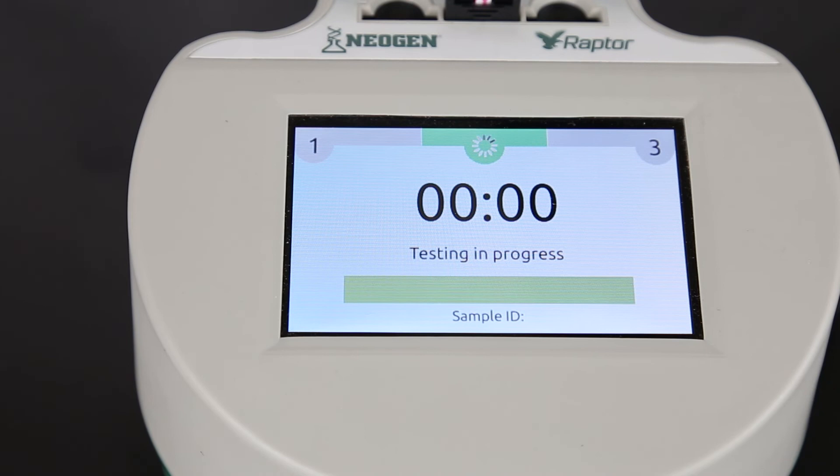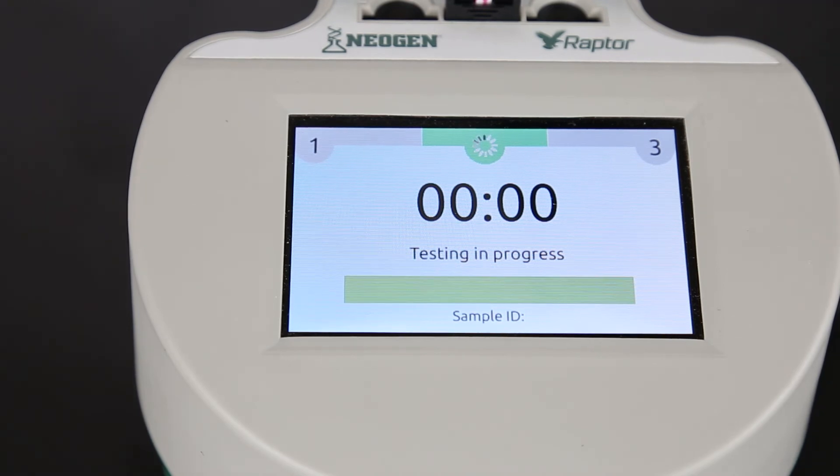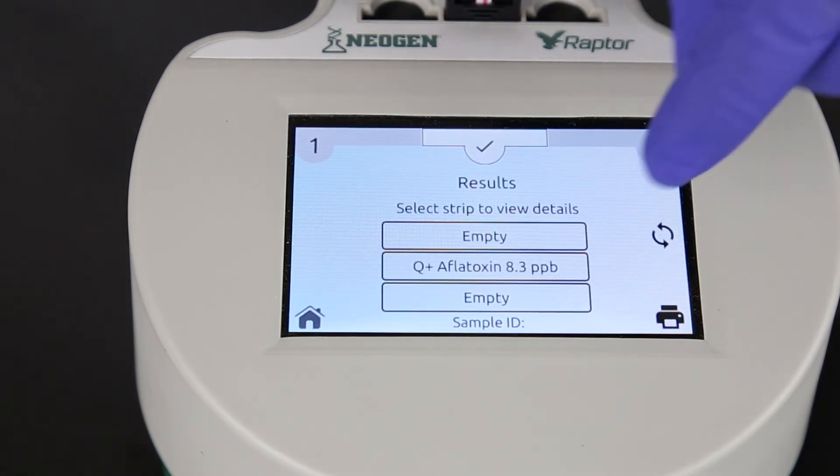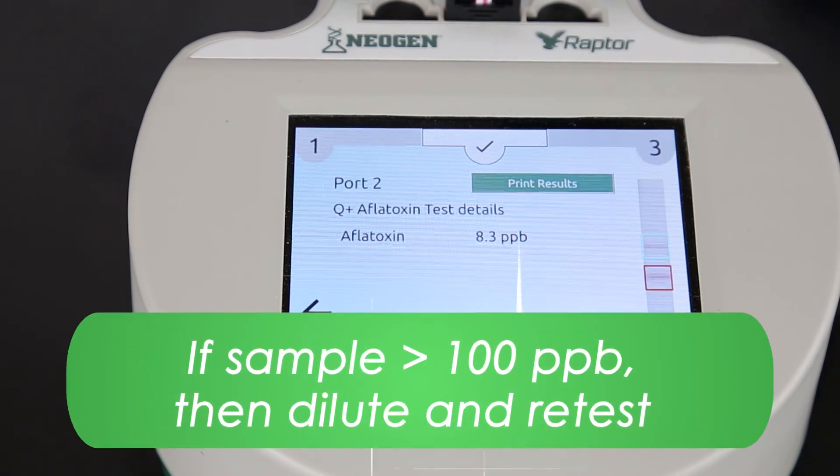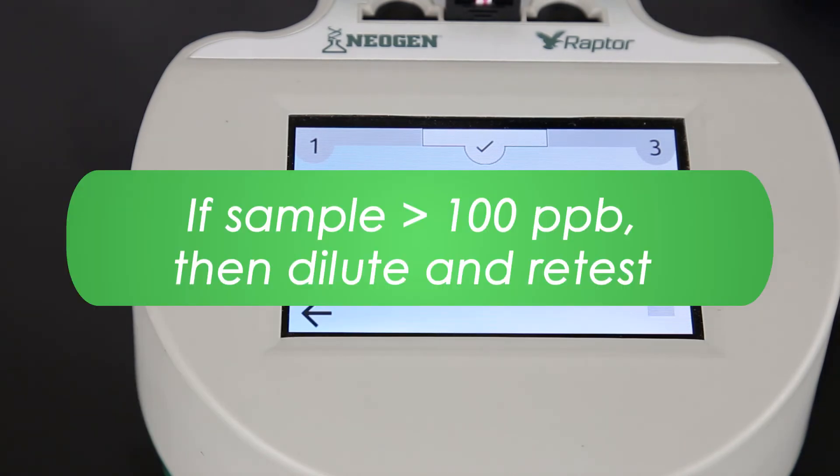After the six-minute testing time, the Raptor displays your results. For samples greater than 100 ppb, you will need to dilute and retest.